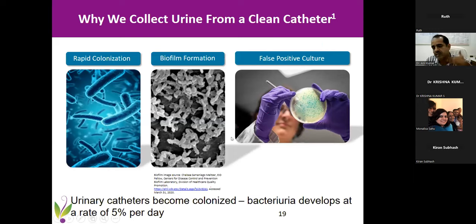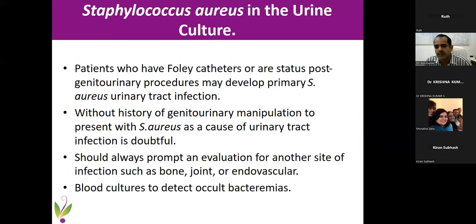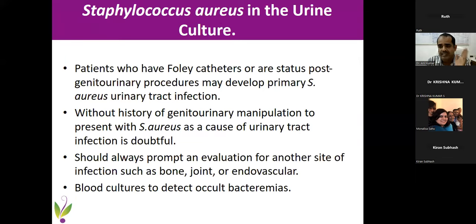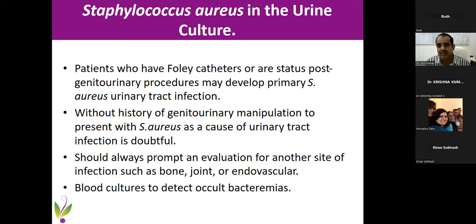Whether a positive culture from a catheterized patient is significant depends on whether the patient has symptoms like suprapubic pain or new-onset fever. Staph aureus in urine is a red flag — it is not a normal uropathogen. It is seen only with an in-situ catheter or urological manipulation. Without these risk factors, staph aureus in urine means infection at another site — endovascular, joint, or bone infection. Always send a blood culture when you get staph aureus in urine without risk factors, because there could be occult bacteremia that may lead to metastatic infections or infective endocarditis.